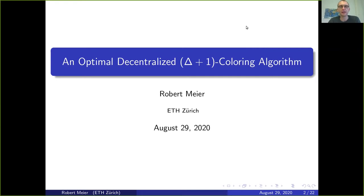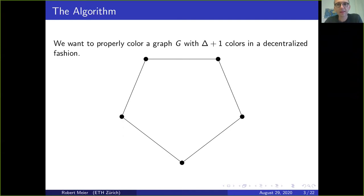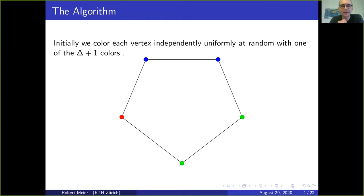Welcome to the talk on the paper 'An Optimally Decentralized Delta Plus One Coloring Algorithm.' It is very well known that we can color any graph with delta plus one colors. Here we consider a decentralized algorithm to find such a coloring. We take any graph and initially color each vertex independently and uniformly at random with one of these delta plus one colors.